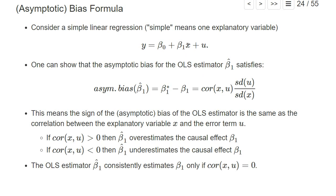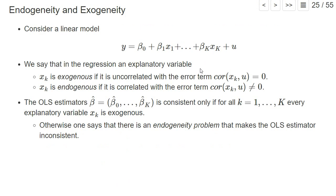The important thing is that the sign of the asymptotic bias of the OLS estimator is the same as the correlation between our explanatory variable and our error term. If the explanatory variable is positively correlated with the error term, our OLS estimator overestimates the causal effect — it's too large. If the correlation is negative, our OLS estimator underestimates the causal effect. Only if our explanatory variable is uncorrelated with the error term do we have a zero asymptotic bias, meaning OLS consistently estimates beta_1.